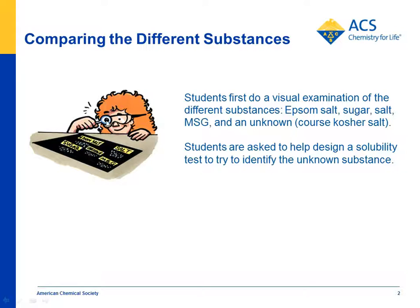Students use just visual examination, and they can see that each substance is slightly different. Although sugar and salt look somewhat similar, you can tell they're different. MSG looks very different, Epsom salt for sure does, and the unknown looks different than everything. The visual examination can't really tell us what the unknown is — so what could we do?